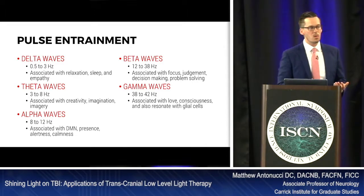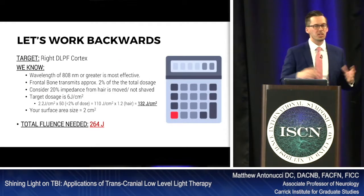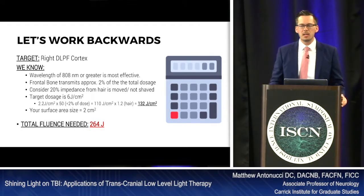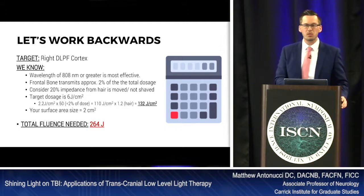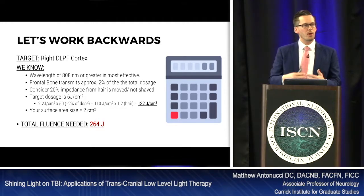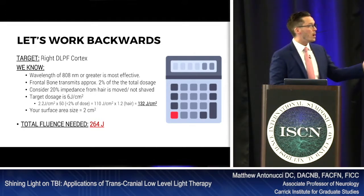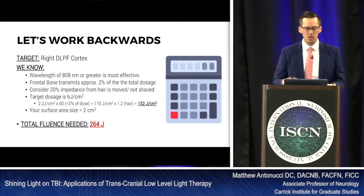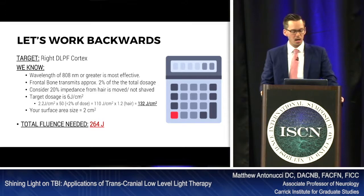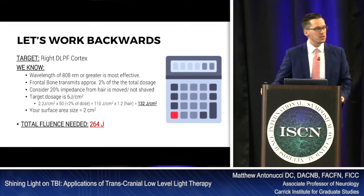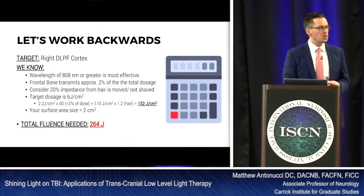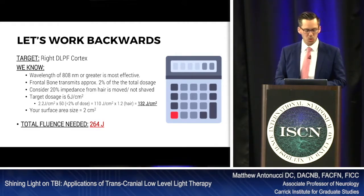Let's work backwards through a dosimetry example. Say our target is the right dorsolateral prefrontal cortex. Research shows 808 nanometers is most effective, the frontal bone transmits about 2% of the light, and we need to account for approximately 20% impedance from hair follicles, tissue melanin, and similar factors. Our target tissue fluence is 2.2 joules per centimeter squared, with a maximum of 6 joules per centimeter squared.